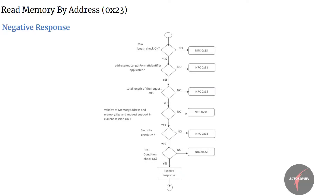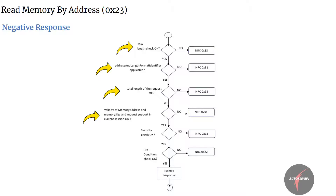The diagram shows the order of evaluation of the different NRCs. Firstly, we have the NRC 0x13 check for minimum length of the request, followed by an address and length format identifier applicability check which, if it fails, would lead to NRC 0x31. Next, there is a check on the total length of the request which, if it fails, results in NRC 0x13 again.